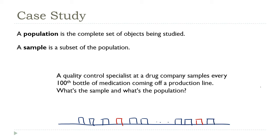Those are the ones that we're going to test. To identify the sample versus the population, remember that the sample is always the items that we're actually measuring, weighing, or otherwise observing. So in this case, that would be the bottles that are being pulled out of the assembly line.